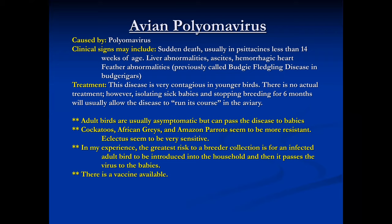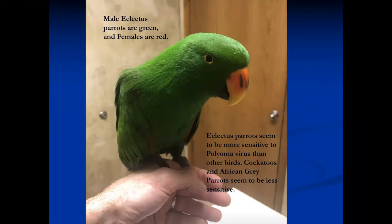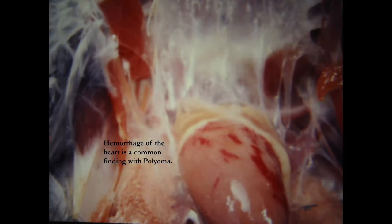Cockatoos, African greys, and Amazons seem very resistant. Eclectus parrots are very sensitive — they're probably the number one affected. Eclectus are easy to sex: the boys are green, the girls are red. Again, hemorrhage in the heart combined with dying babies while adults remain asymptomatic is the hallmark presentation.